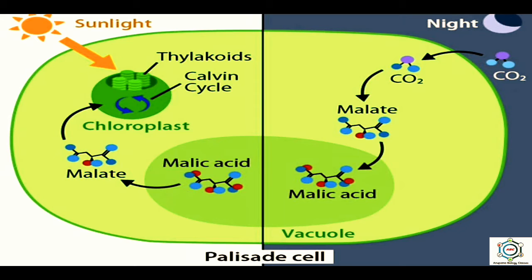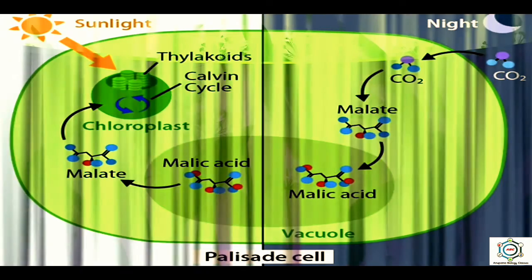The metabolic pathway of CAM involves acidification, which occurs at night, and deacidification, which occurs during the day. During night, the organic acid content of CAM plants increases and the pH of the cell sap decreases. During the day, the organic acid content decreases and pH of the cell sap increases. Storage carbohydrates increase during the day and decrease during the night.